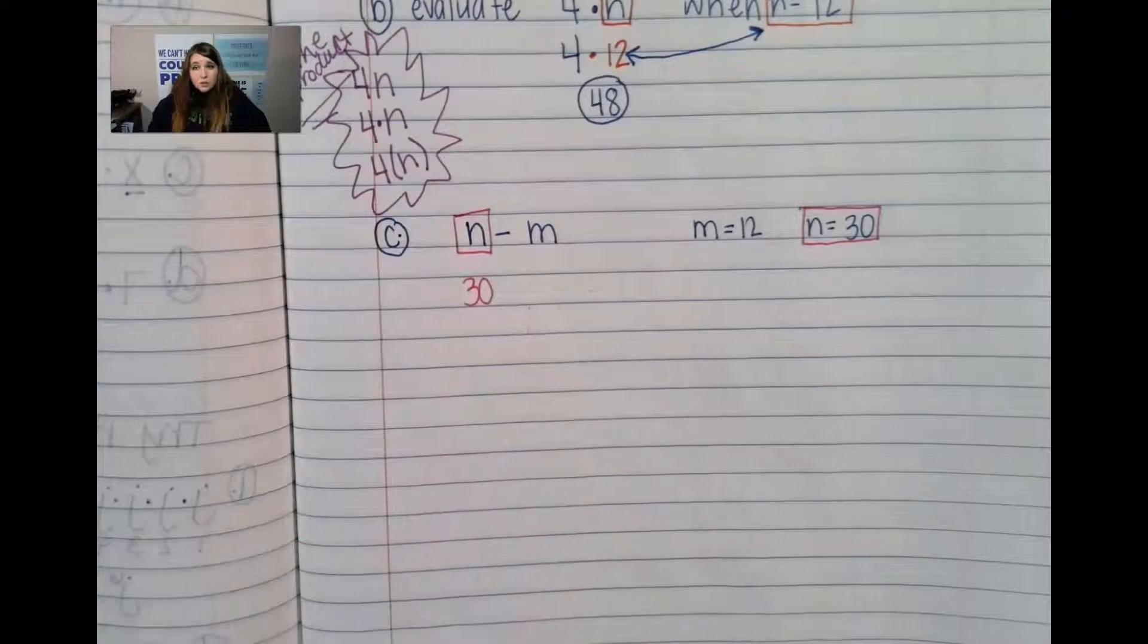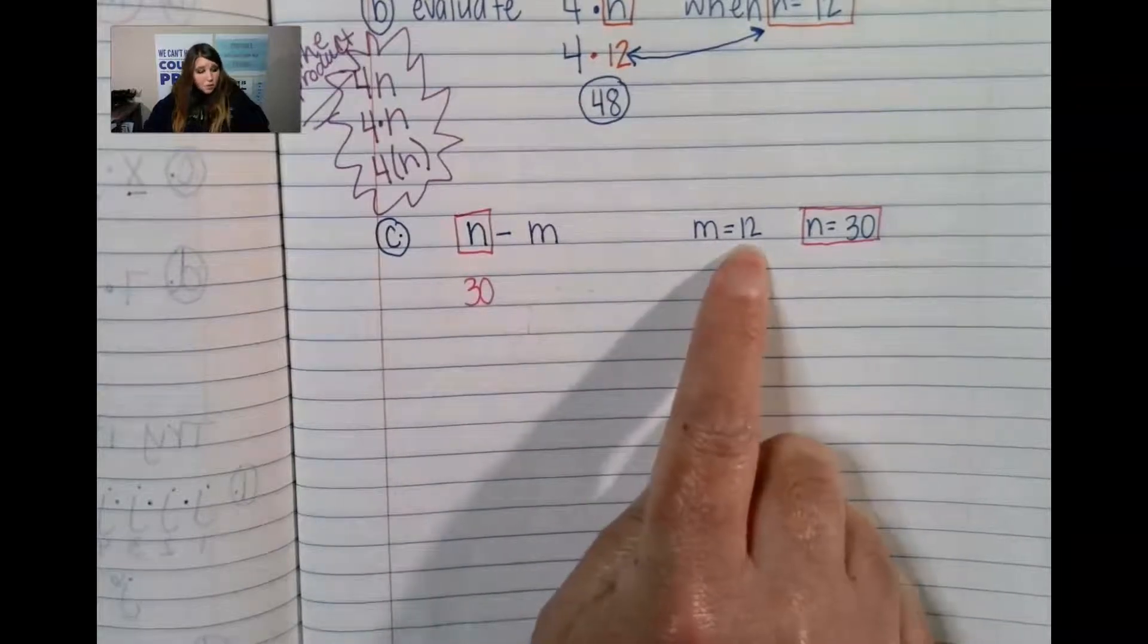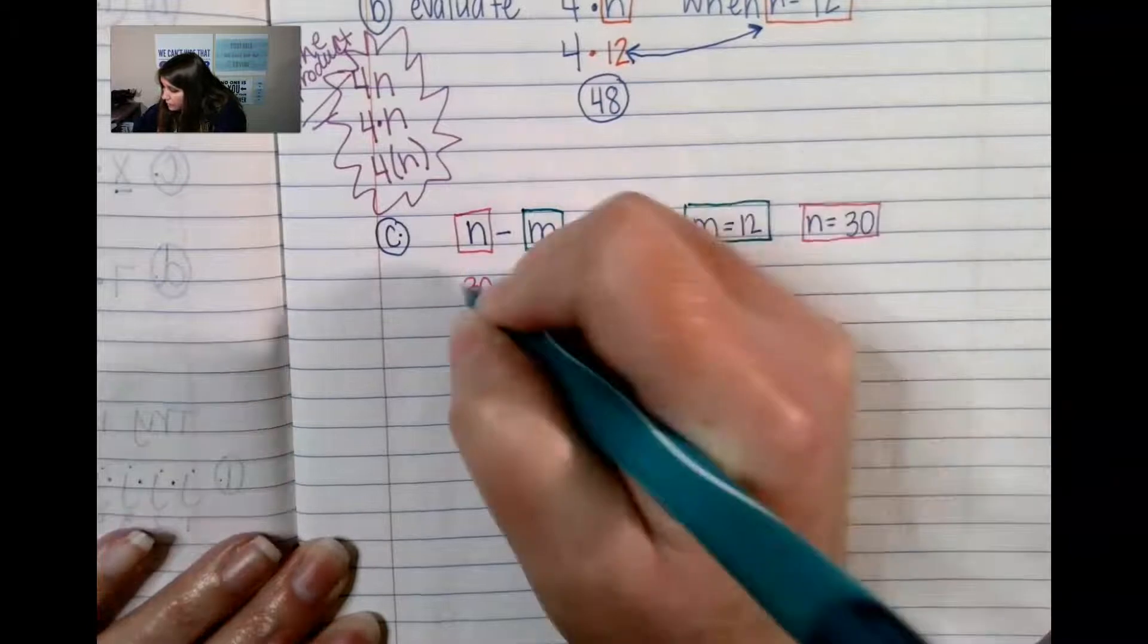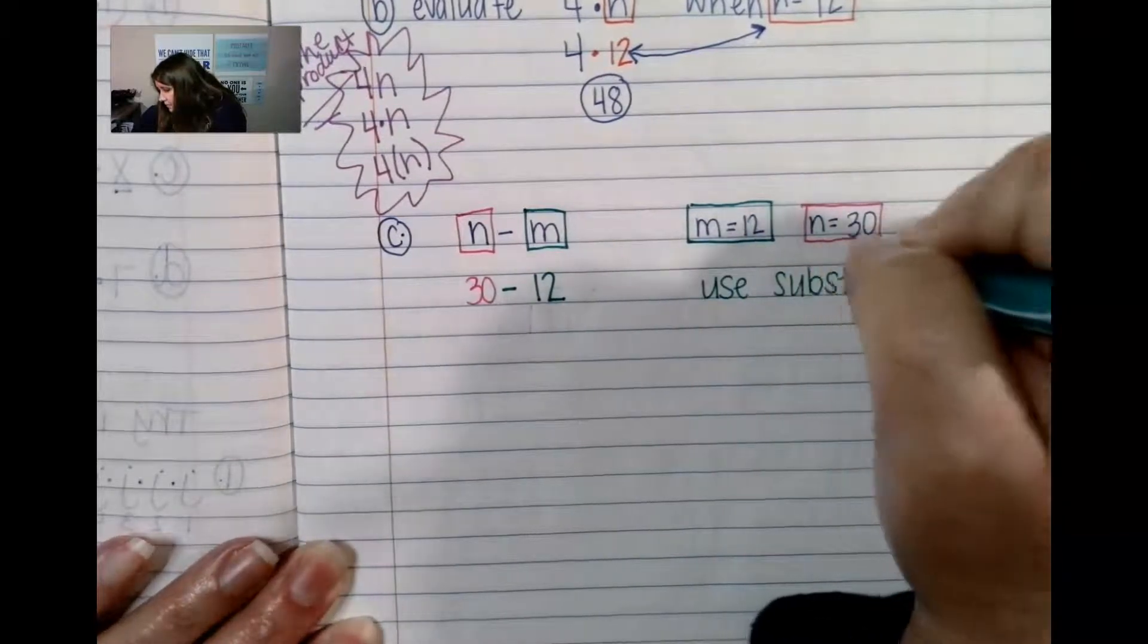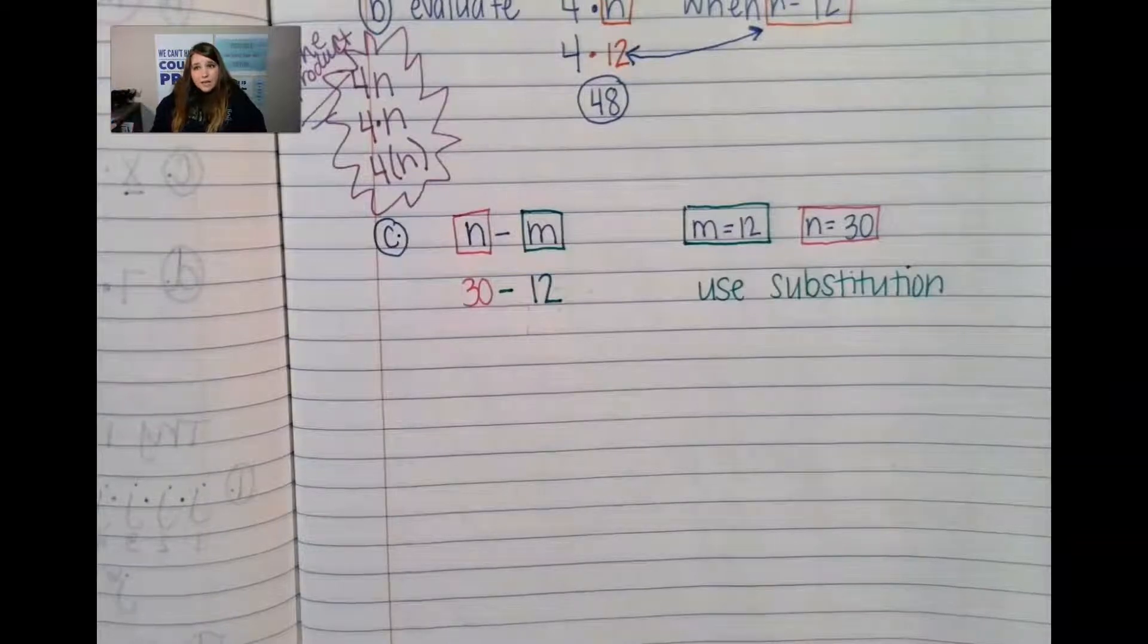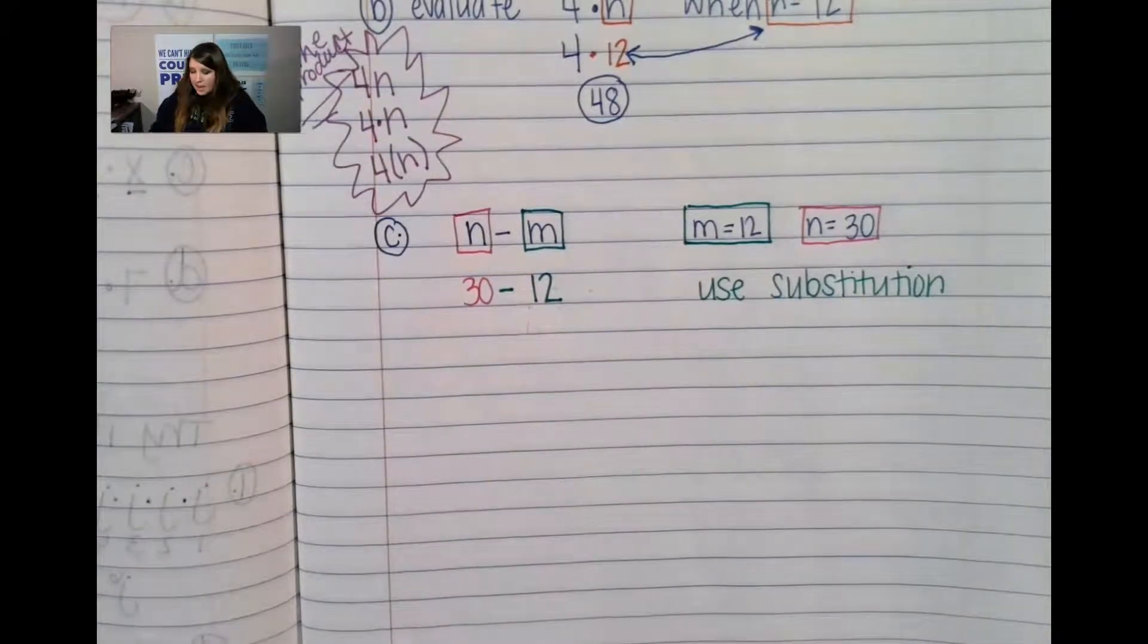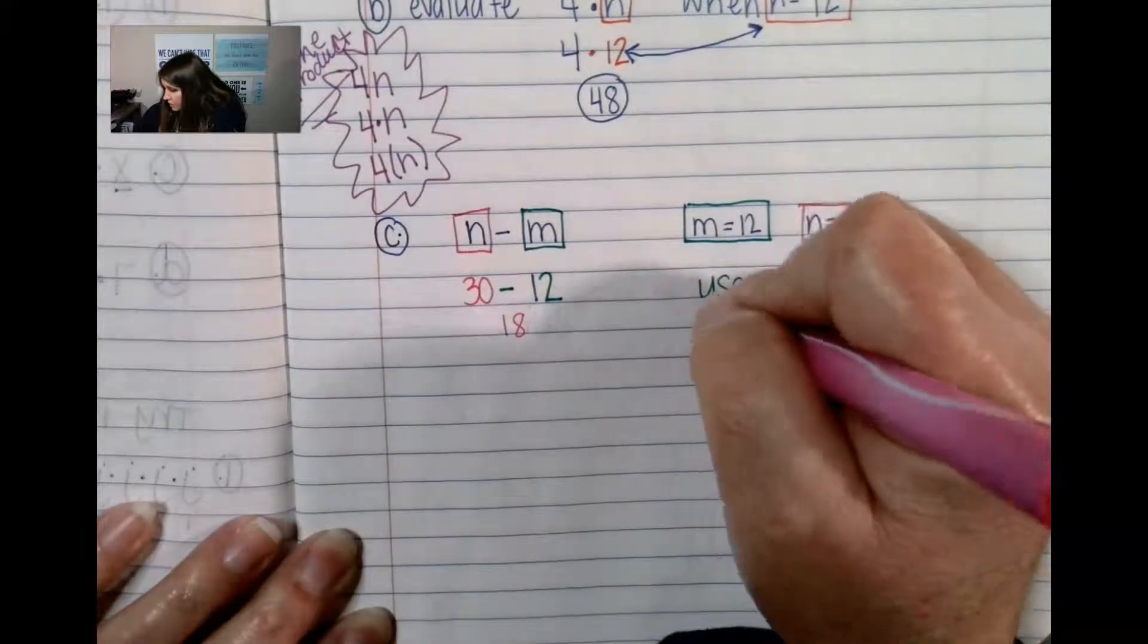So instead of having the m, I have a 12 now. So instead of that, I'm going to put a 12. So now I have minus 12. So my first step was to use substitution. I switch out the numbers for the letters. And now I need to solve. So I'm going to subtract 30 minus 12 gives me 18. So my last step is to solve.